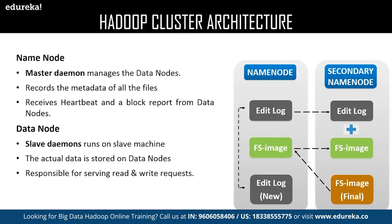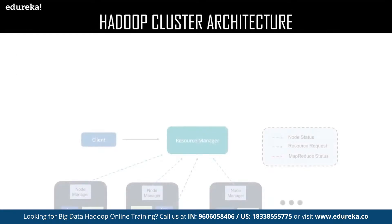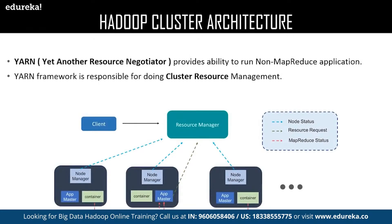The last HDFS component is the Secondary Name Node. It is not actually a backup of the Name Node, but acts as a buffer which saves the latest updates to the FS image obtained in the intermediate process and finally updates them to the final FS image. Now let us discuss YARN — Yet Another Resource Negotiator. YARN consists of the following elements: Node Manager, App Master, and Container.